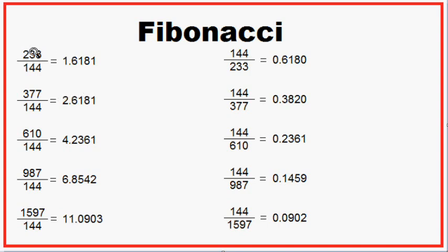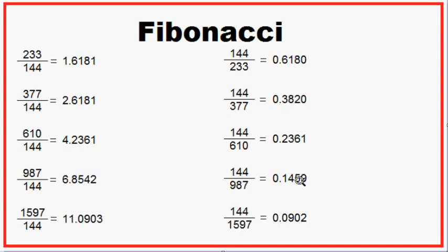If you take the next number after 144, which is 233, you're going to get 161.8. The next following number gives you 261.8, followed by 423.6, 685, and 1109. This is important in calculating Fibonacci upside targets in the stock market. On the right-hand side, where you divide the larger number, it goes from 61.8 down to 38.2, 23.6, 14.6, and a 9% Fibonacci retracement.